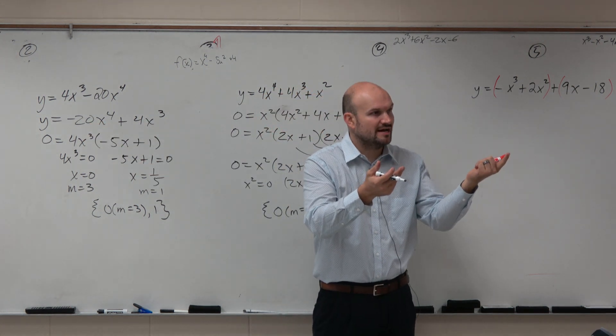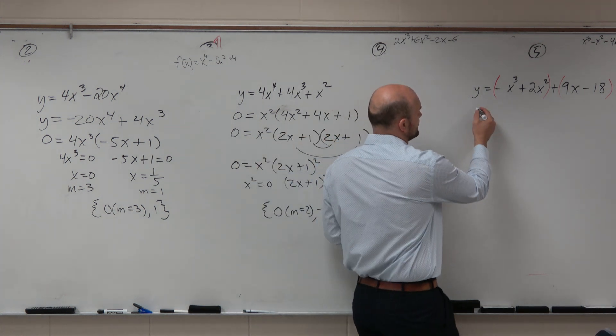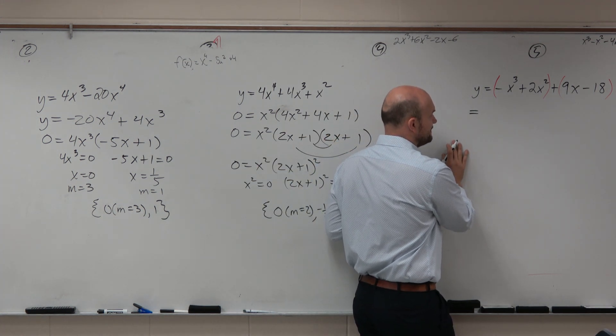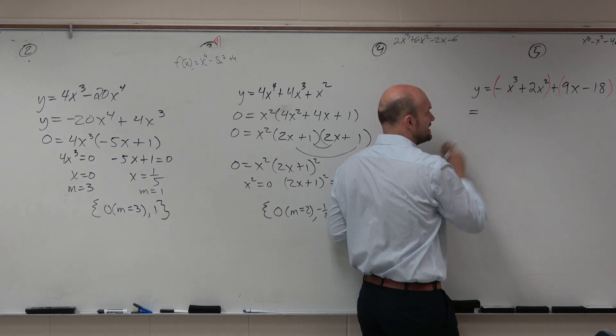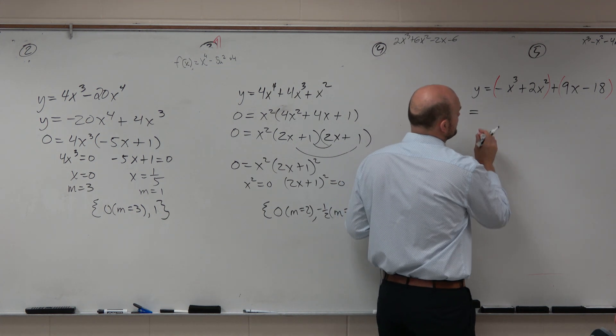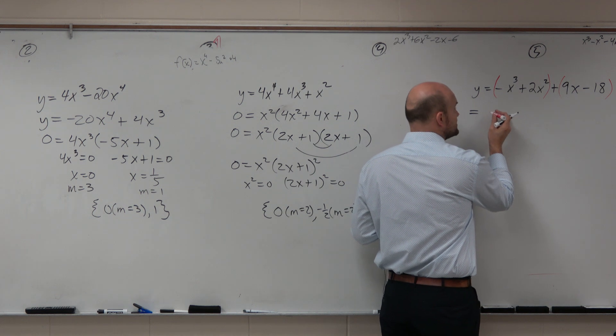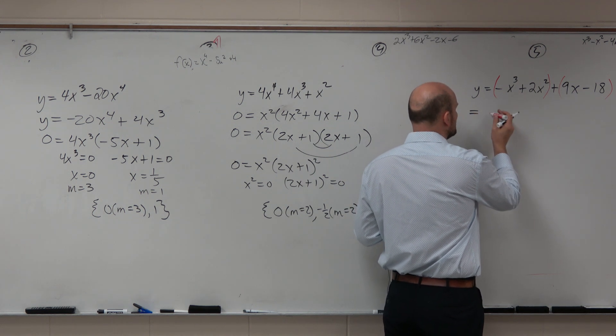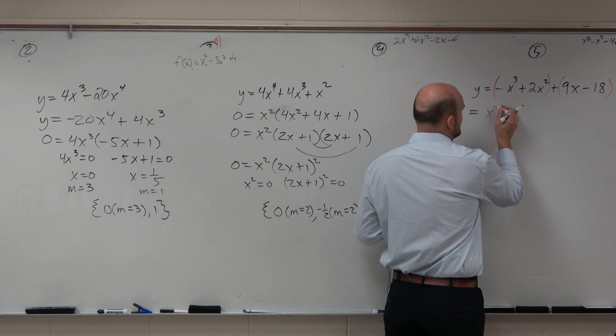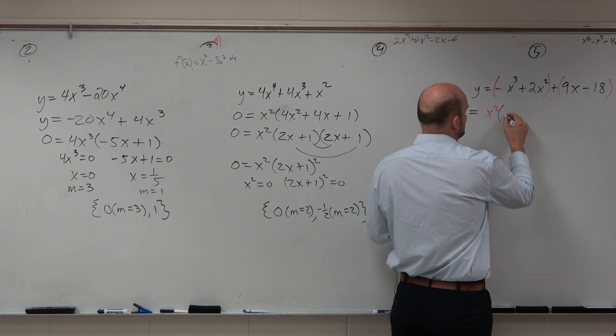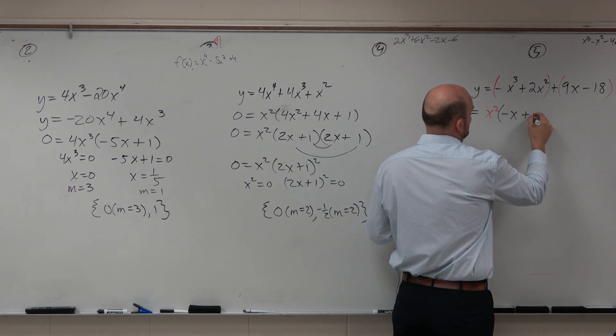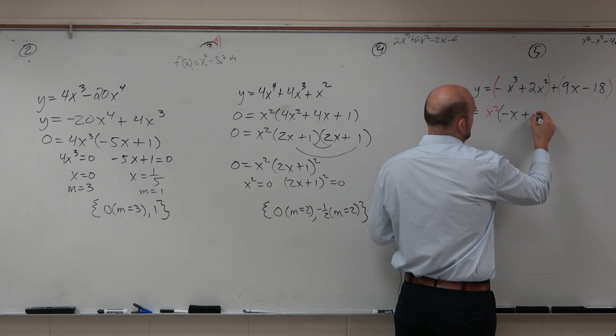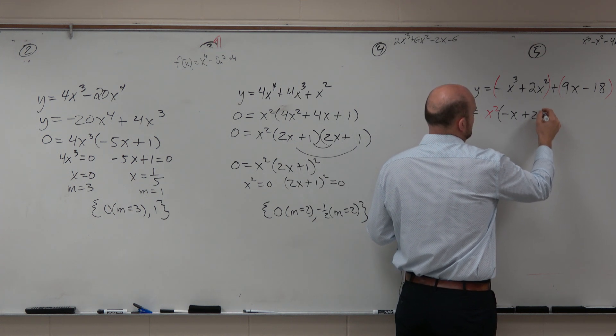Factor out the GCF. So when I look to factor out the GCF here, I say, what do these have in common? Now, I'm going to change this up. I'm going to say, oh, let's do x². So you can factor out an x². And when you factor out an x², you're going to be left with a -x + 2.